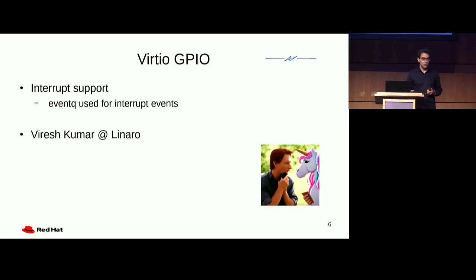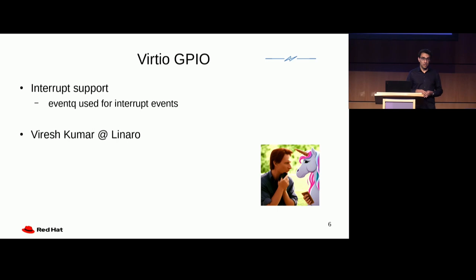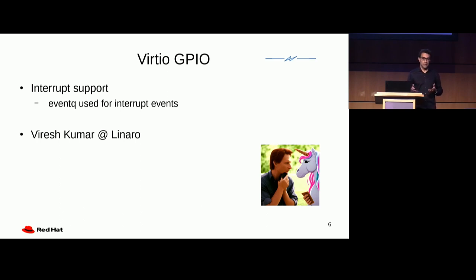GPIO has also been enhanced — not rewritten — but the big item here is support for events. So if you have a physical device and someone changes the level of the voltage on one of the pins, you want to report that to the guest. And now that's possible using a special event queue. So the GPIO device now becomes a source of interrupts.